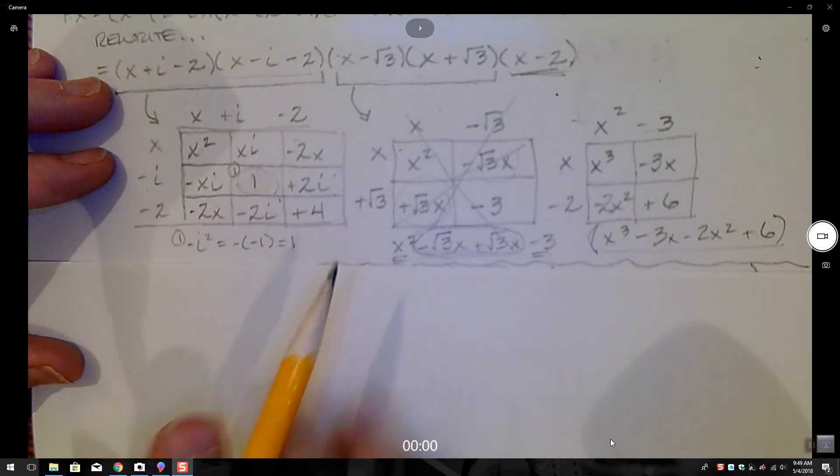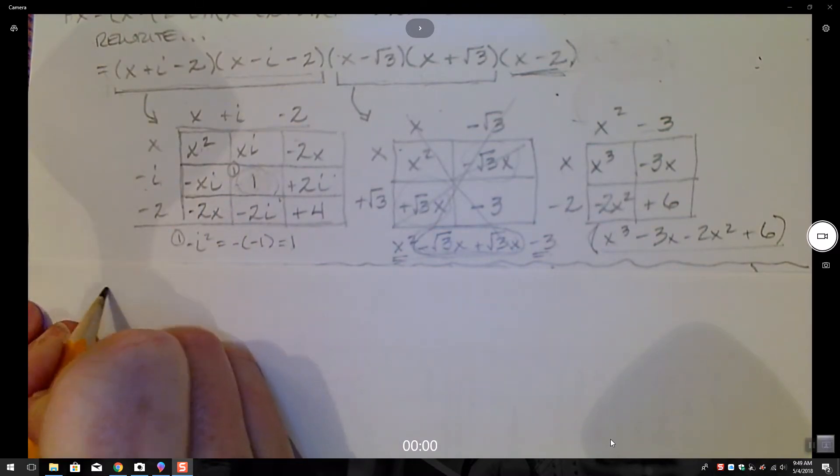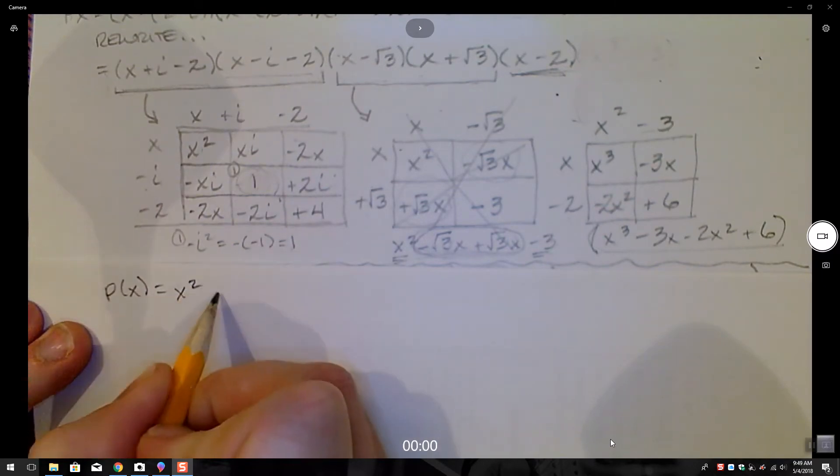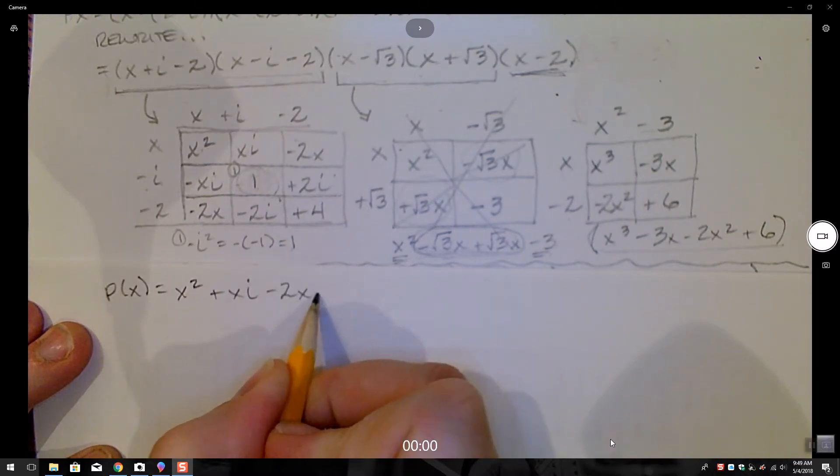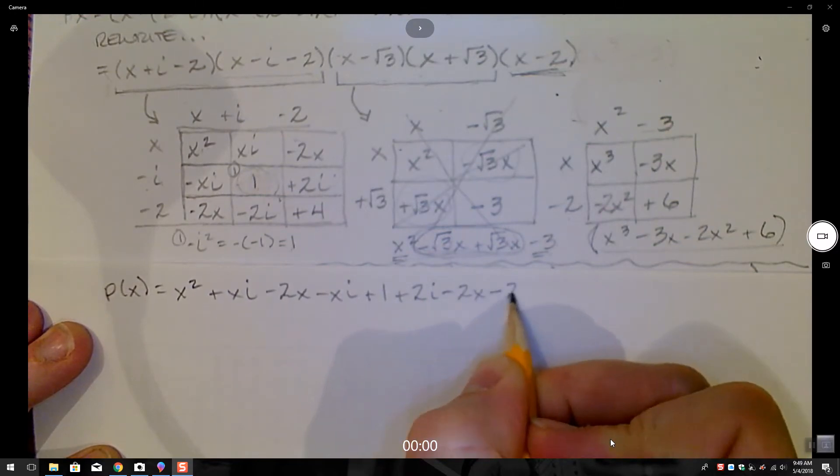The only thing I haven't done yet is turn this into an expression, so let's do that. Our p of x equals x squared plus xi minus 2x minus xi plus 1 plus 2i minus 2x minus 2i plus 4.